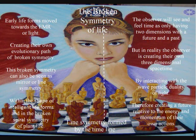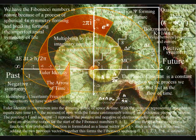Life is an integral, interactive part of this process of symmetry forming and breaking, creating its own evolutionary path of broken symmetry. This broken symmetry can also be seen as mirror or line symmetry, within the shape of intelligent life forms, and in the broken spiral symmetry of plant life.